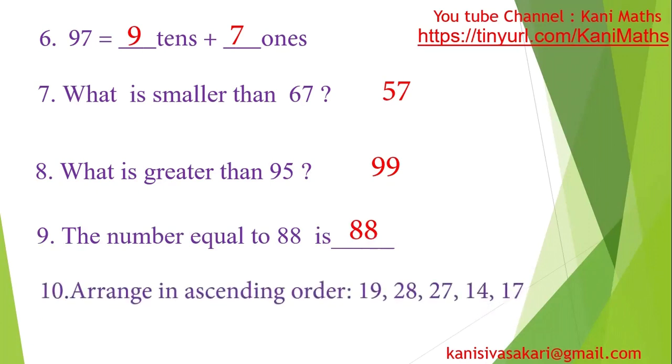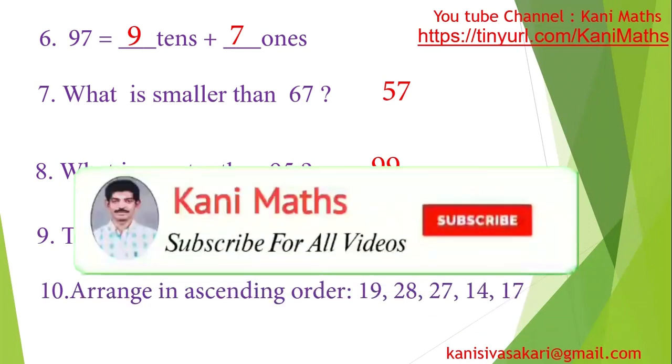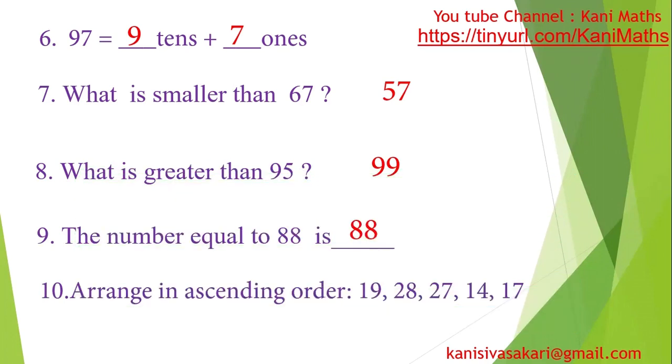10th, arrange in ascending order: 19, 28, 27, 14, 17. Ascending order, what is ascending order? Ascending order is small number to big number. Descending order is big number to small number.